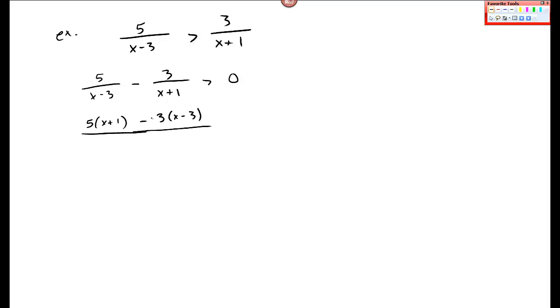So I multiply this 5 by x plus 1, so that's over x minus 3 and x plus 1. And I multiply this 3 by x minus 3. And that's now over x minus 3 and x plus 1.